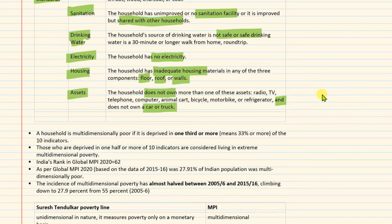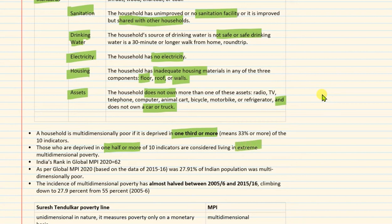A household is multi-dimensionally poor if it is deprived in one third or more of the ten indicators. Each indicator is measured on a scale of zero to one — zero meaning no deprivation, one meaning full deprivation. If deprivation is found in one third or more of the 10 indicators, that household is termed multi-dimensionally poor. Households deprived in one half or more of the ten indicators are considered to be living in extreme multi-dimensional poverty.